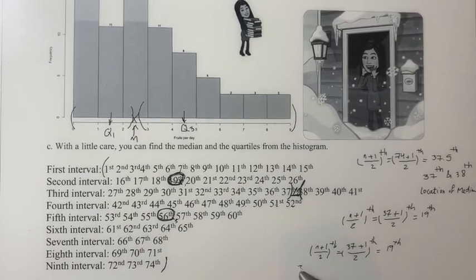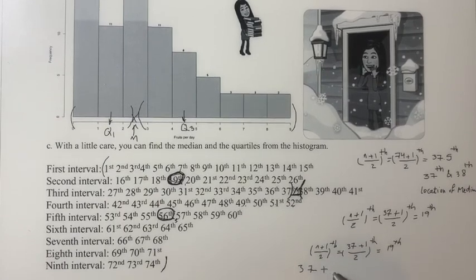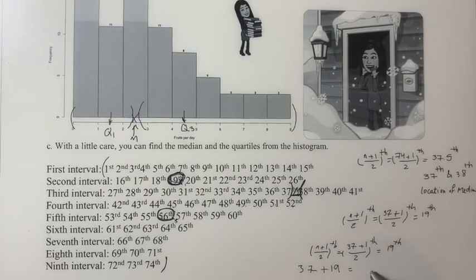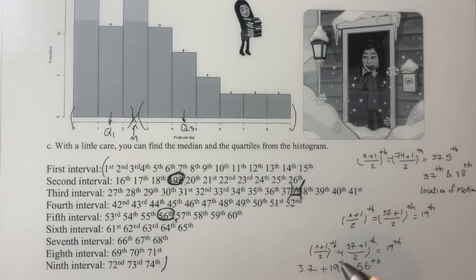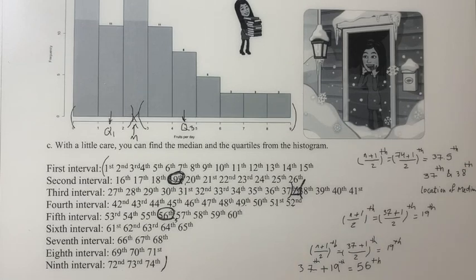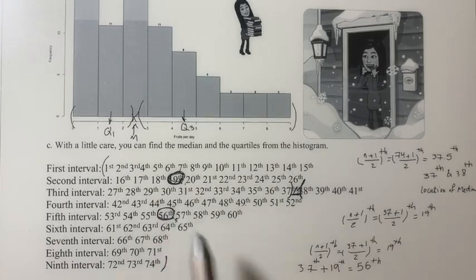I know I had 37 observations before the median, plus 19 observations after that. So what do you get? So if you want to count from the first observation, you already had 37 here, and then you are looking for 19 more.